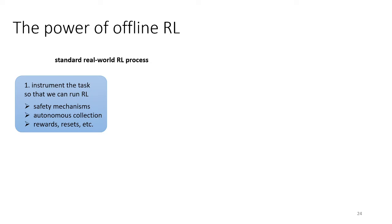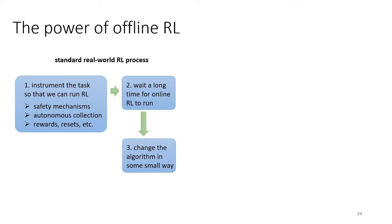You probably need some safety mechanism — whether you're doing robotics or algorithmic trading, you need something to make sure your exploration policy doesn't do crazy stuff. You might need to put work into autonomous collection and reset between trials. You need to design rewards; for online RL you really need an automated reward function, which means writing code or training a model. Then you wait a long time for RL to run, and this can be a manual process requiring safety monitoring. If you change something about your algorithm, you have to rerun the whole process, and when you're done you throw it all out to start over for the next task.